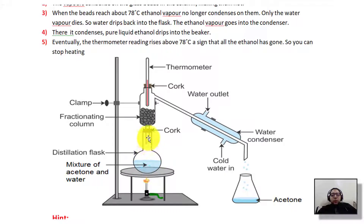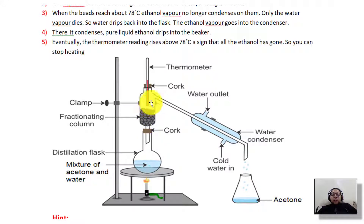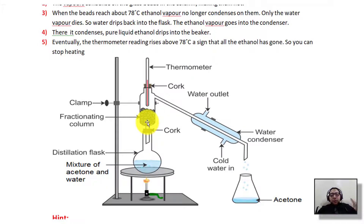The temperature in the fractionating column is also 78°C. When both acetone and water vapor rise and contact the glass beads, acetone — whose boiling point is exactly 78°C — continues moving through as vapor without condensing and passes through to the condenser. The water vapor, however, encounters the glass beads as a cooler surface relative to its boiling point.